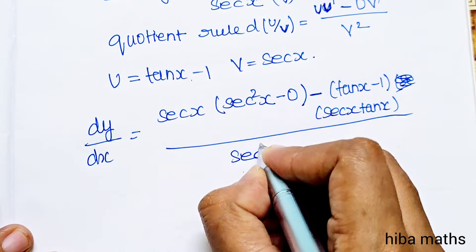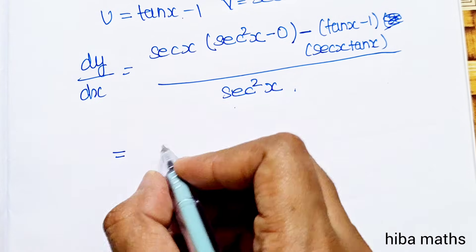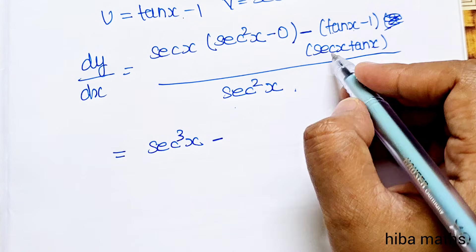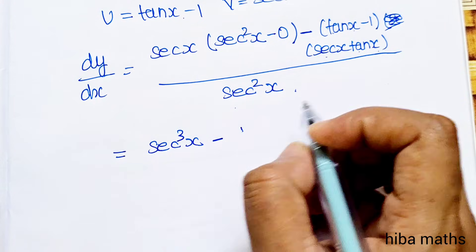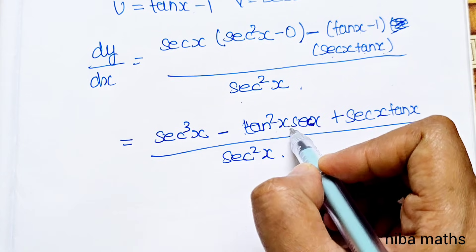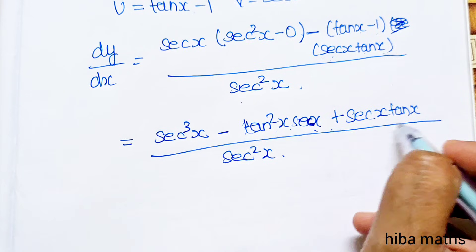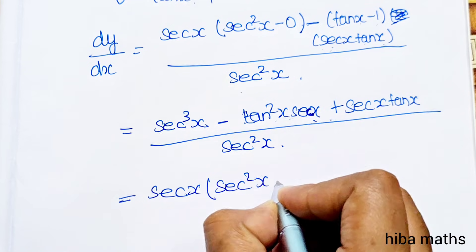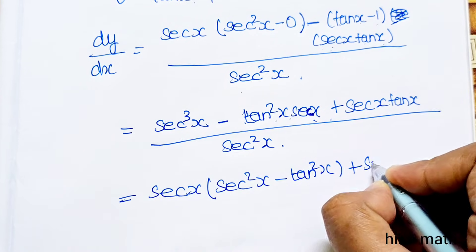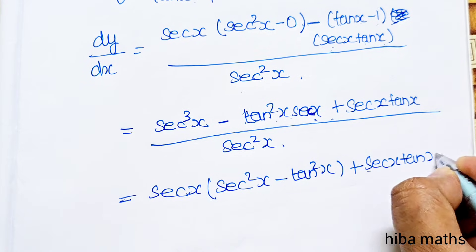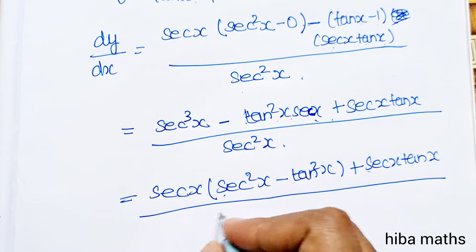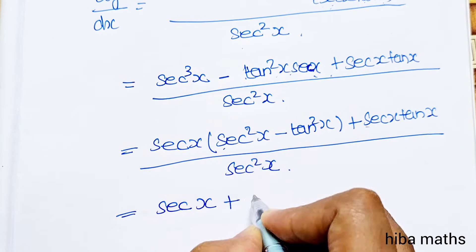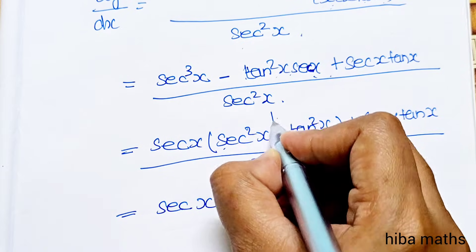Divided by v square, that is sec²x. Expanding inside: sec x times sec²x gives sec³x, minus (tan x minus 1) times sec x·tan x. Expanding: sec³x minus tan x·sec x·tan x, which is sec x·tan²x, plus 1 times sec x·tan x. Now using the identity sec²x minus tan²x equals 1, which simplifies things. So we get 1 plus sec x·tan x.